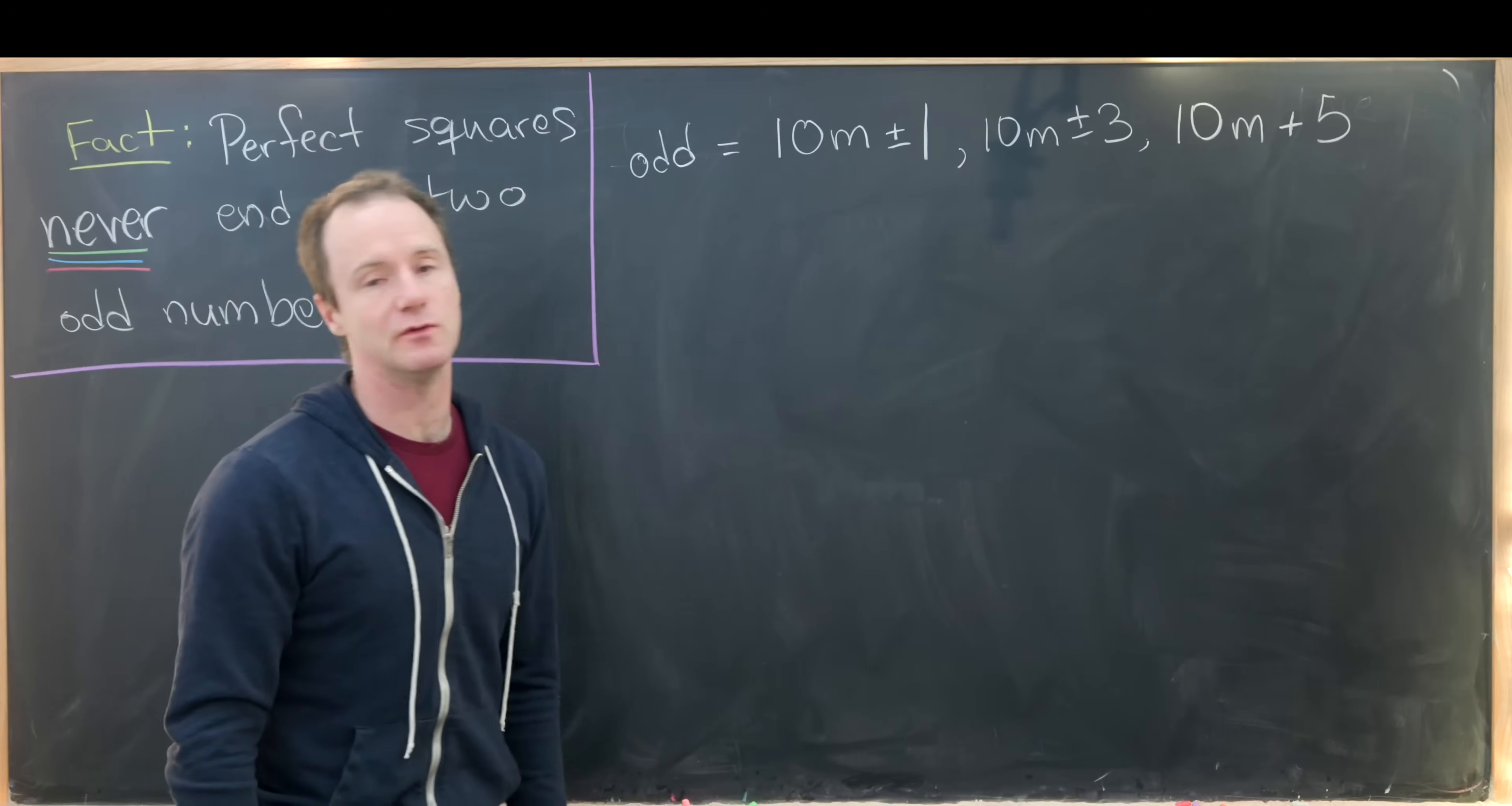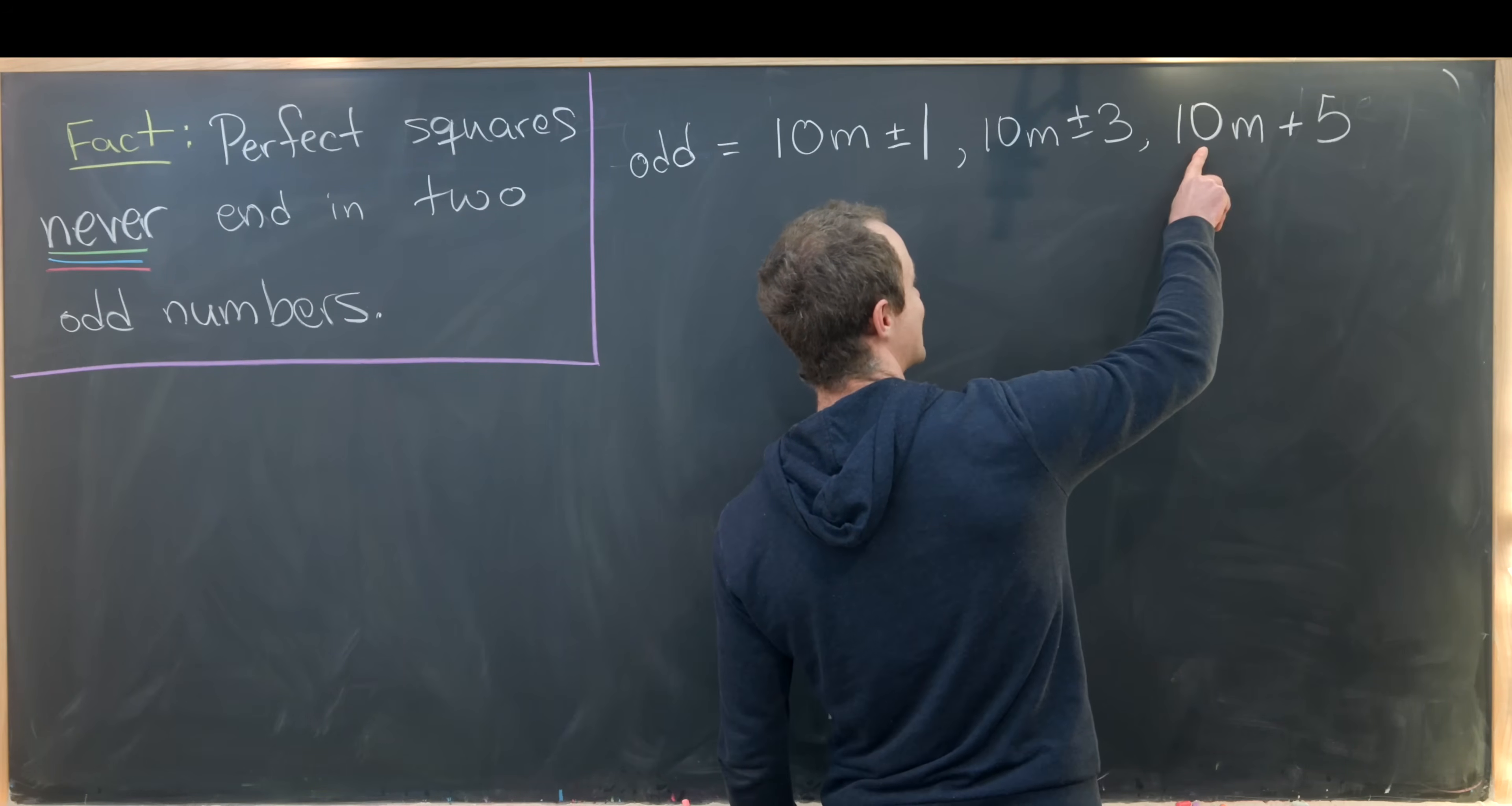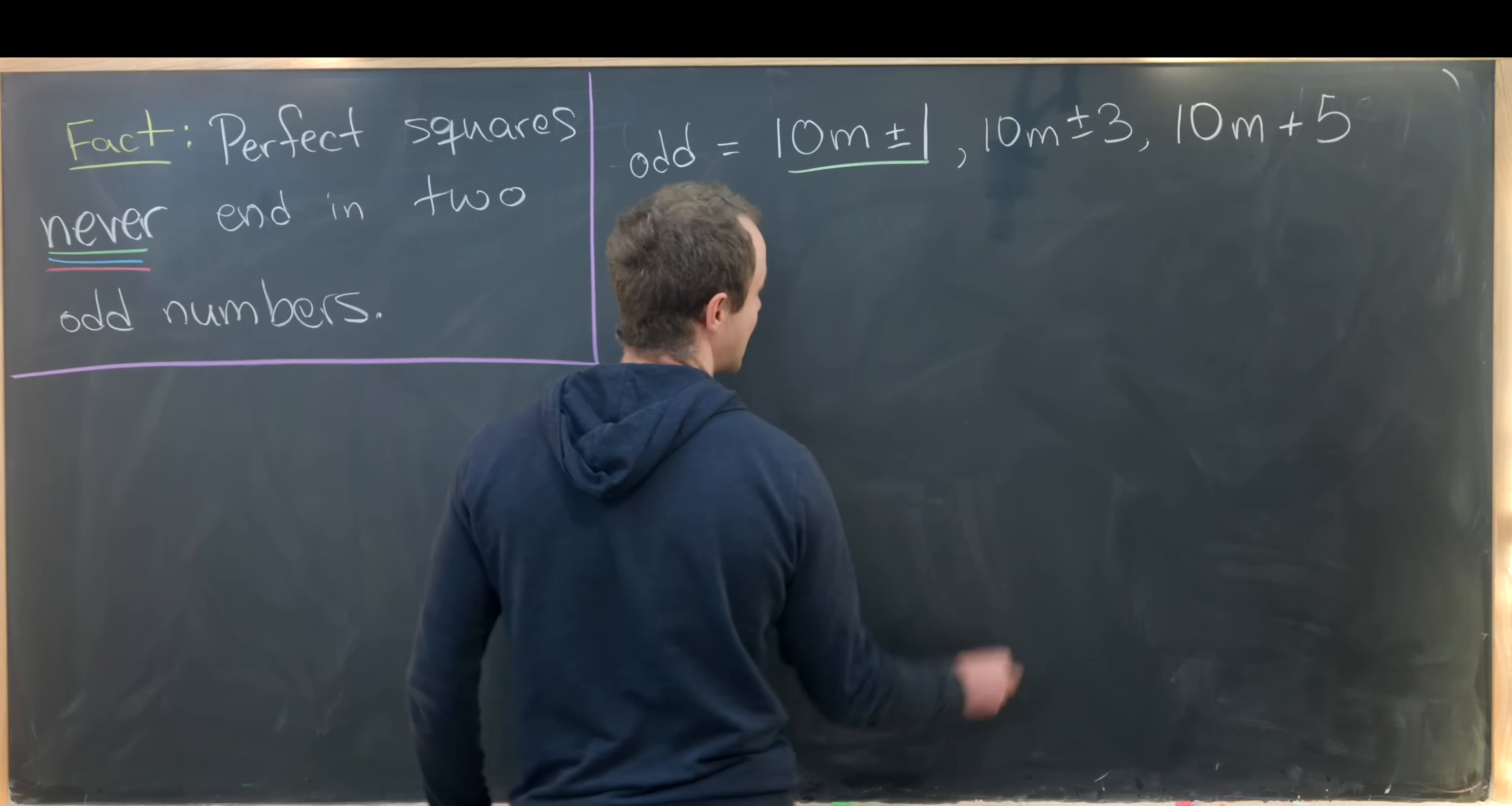Obviously a different m value, but the same numbers. So notice 25 is 10 times two plus five. It's also 10 times three minus five. Again, that means that we don't need 10m plus or minus five. We just need plus five. And now we're going to work these into three separate cases.